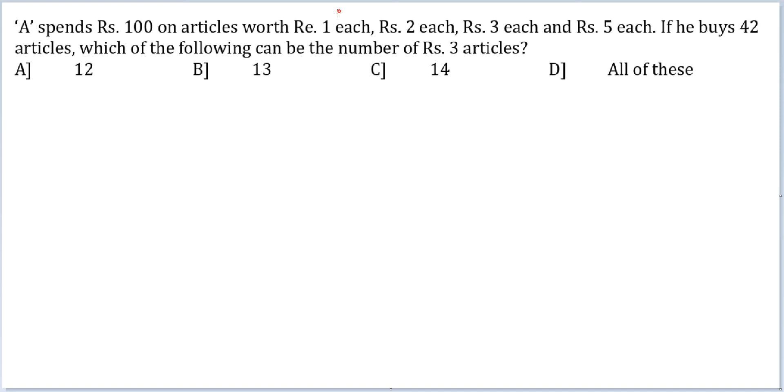So, 1 rupee articles, let them be A, let this be B, C and D. So A plus B plus C plus D is equal to 42. And then the amount spent is 100. So, A plus 2B plus 3C plus 5D is equal to 100.